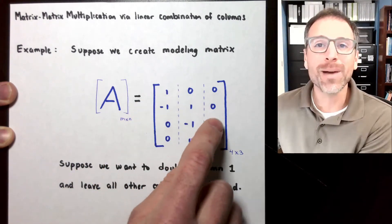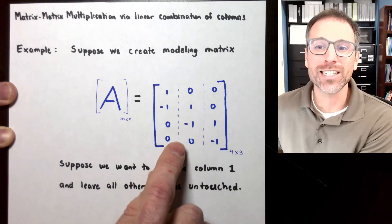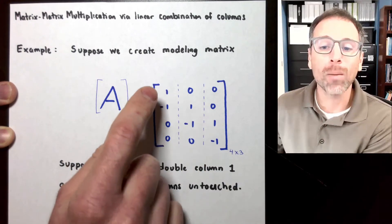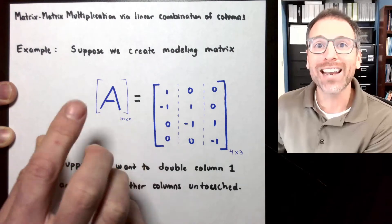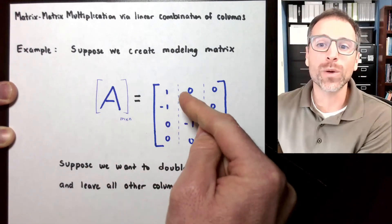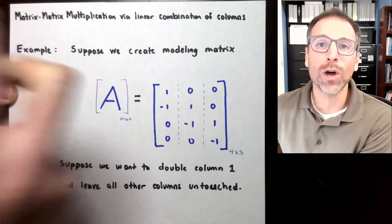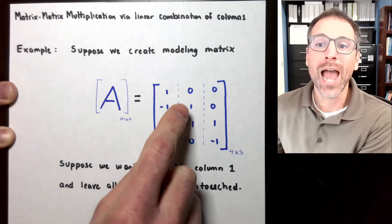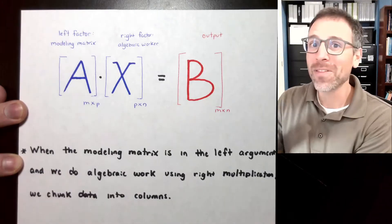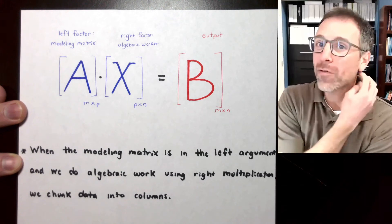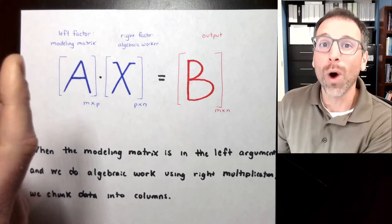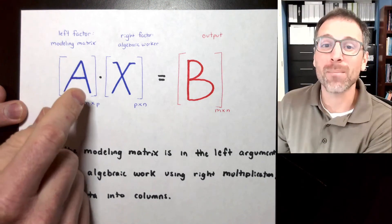The entry-by-entry definition of this modeling matrix is seen here. Suppose that we want to double column 1 and leave all other columns untouched — in other words, multiply every entry in column 1 by 2 and not touch columns 2 or 3. Remember, in this lesson we're developing four different versions of matrix-matrix multiplication, one of which is done by columns.